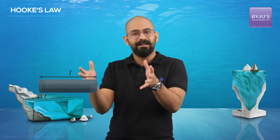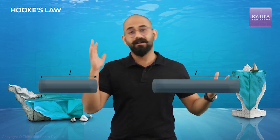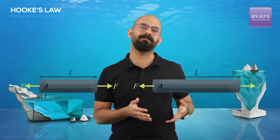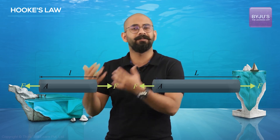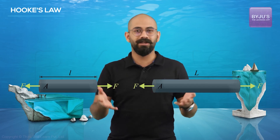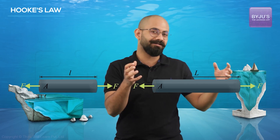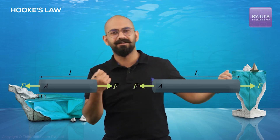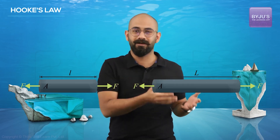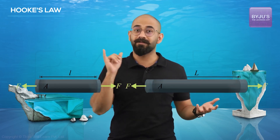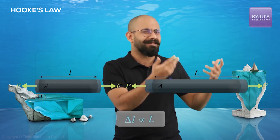Now let's change another variable — what about the length? Say I have one rod of shorter length and another of longer length, with the same area of cross-section and the same force applied. Which will have a greater delta L? If you've ever played with an eraser, you'd find the longer eraser was easier to elongate. That's exactly true here — experimentally, as length increases, delta L also increases.